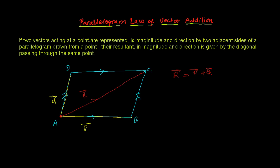If you see this parallelogram law of vector addition a little differently — the opposite sides are parallel and equal in a parallelogram. So if the AD side and BC side are equal, and both have the same direction because they are parallel, then the magnitude is the same because the lengths are equal and they are same-directed. So I can say that this side is also vector Q.